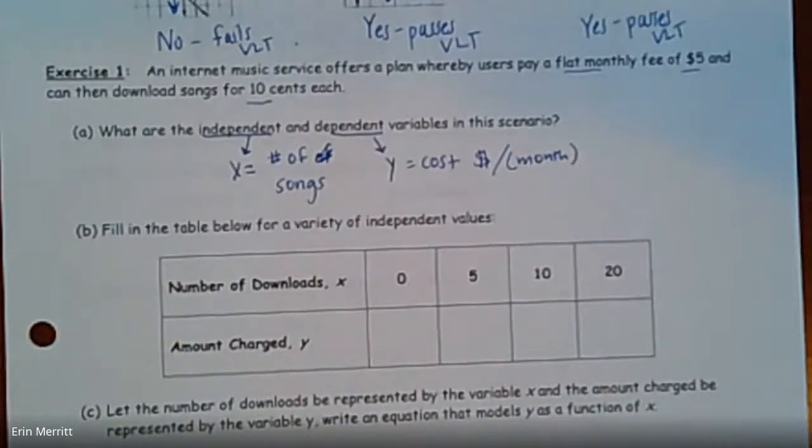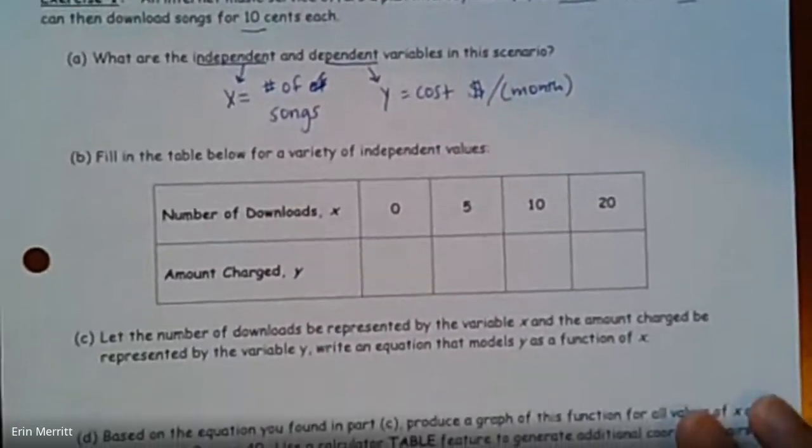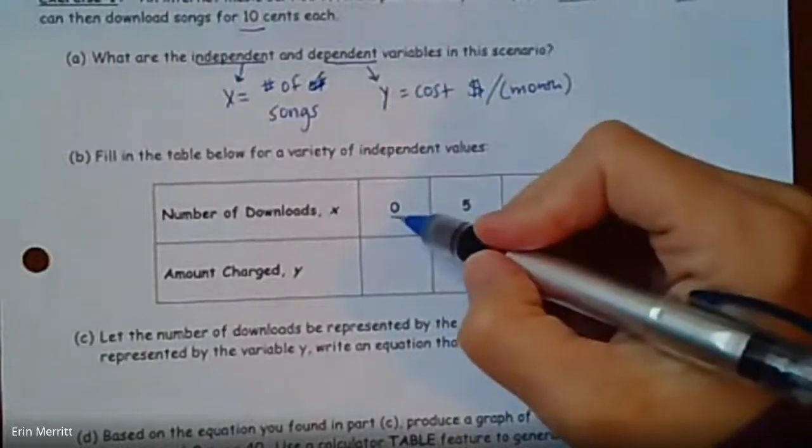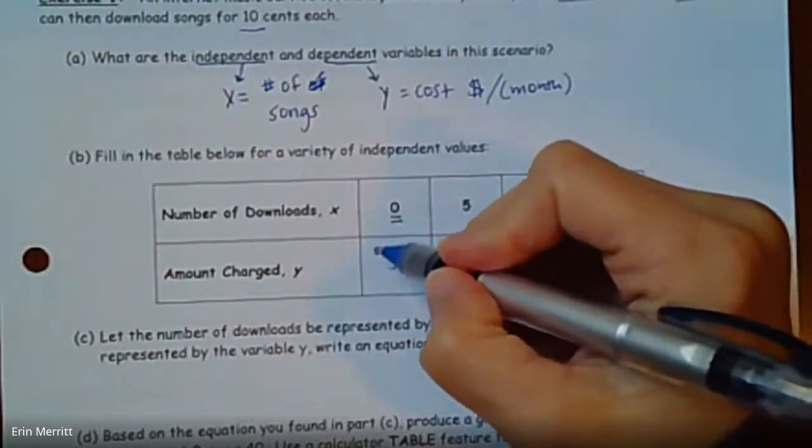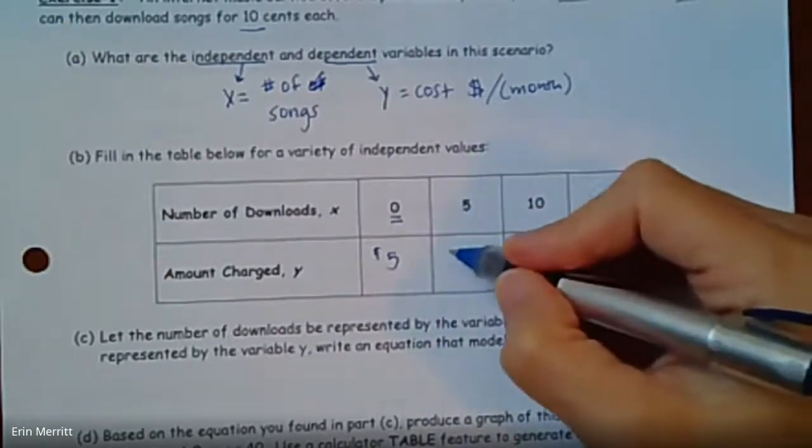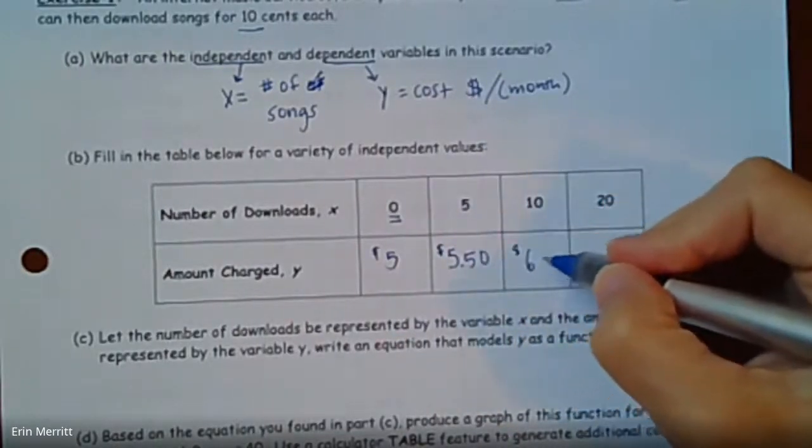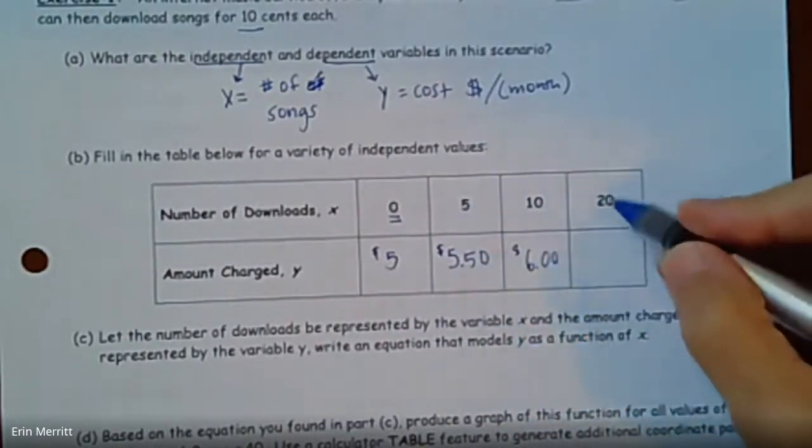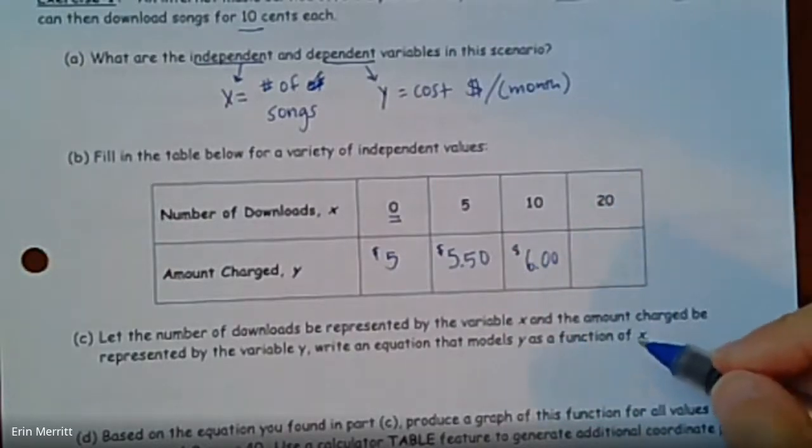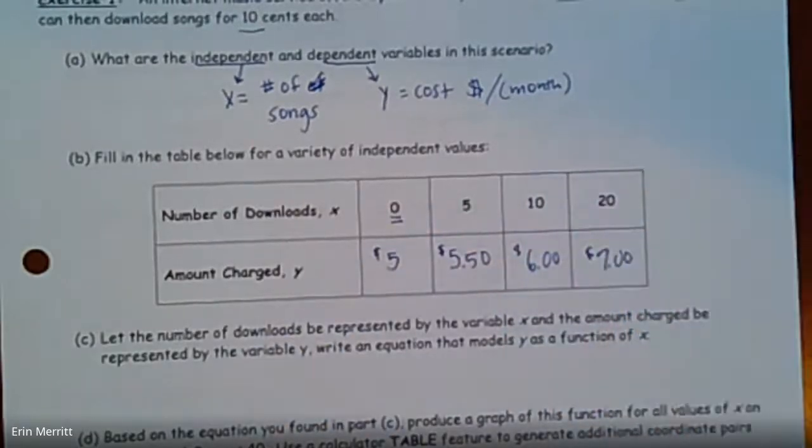So it says fill in the table. I just want you to do some quick calculations. So they're saying it costs you $5 flat fee. So that means you're paying $5 up front and then downloading from there. So even if you download zero songs, it's going to cost you $5. If you download five songs at 10 cents a piece, that's a whopping 50 cents on top of that. So this should come up to then $5.50. And then if we're at 10 songs, that would be $6 even. And then 20 songs, so what $7?